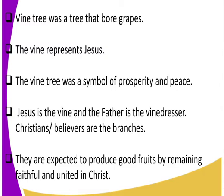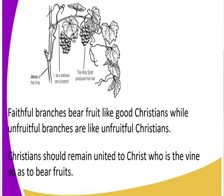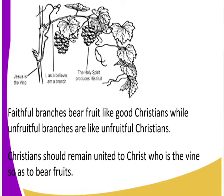Christians are expected to produce good fruits by remaining faithful and united in Christ. Do you think if the branches cannot remain united to the vine they will get to produce fruit? They will not. That is why John is telling us that Christians — we are the branches — we should remain united in order to bear good fruits. It is Christians who are going to bear fruits.